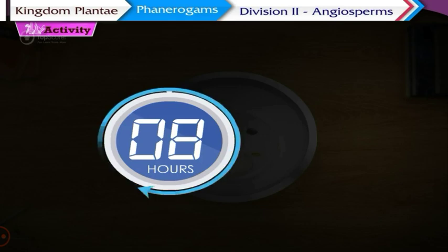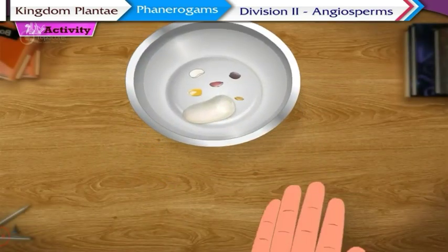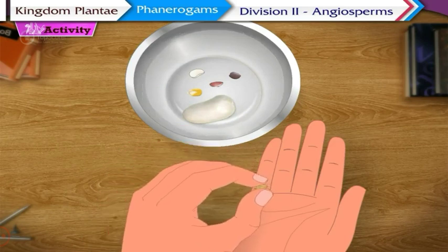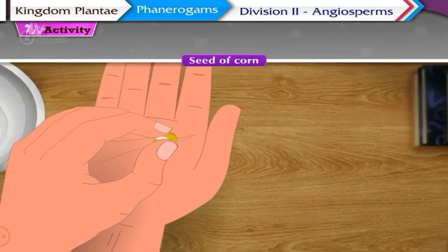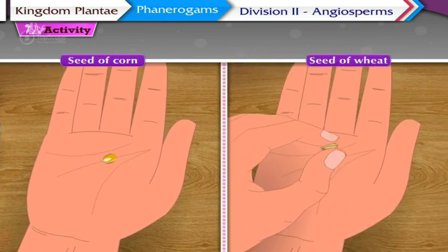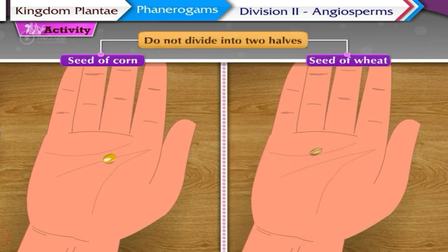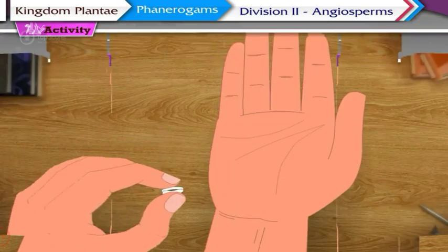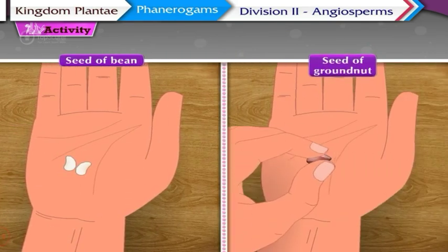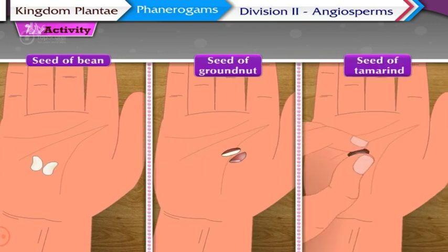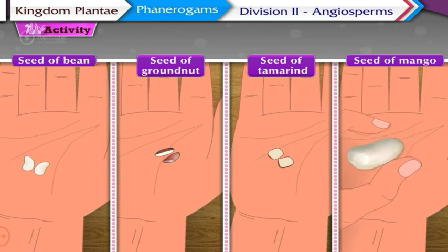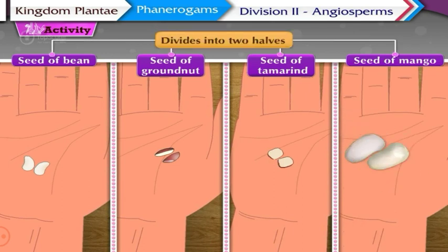After 8 to 10 hours, press each seed and check whether it divides into two equal halves or not. The seeds of corn and wheat do not divide into two halves, whereas the seeds of bean, groundnut, tamarind and mango divide into two halves.